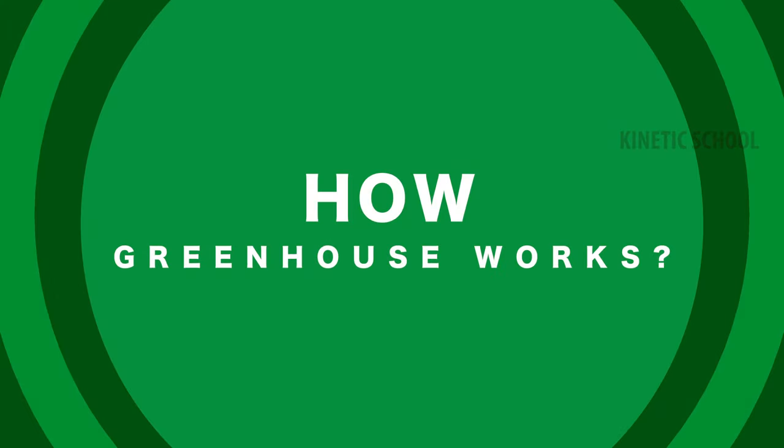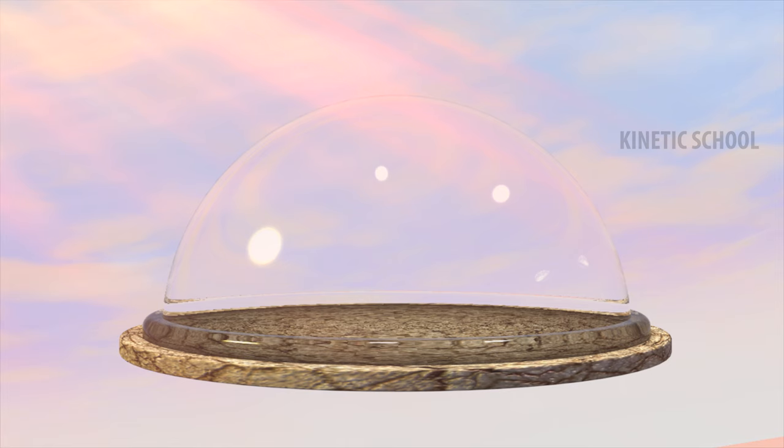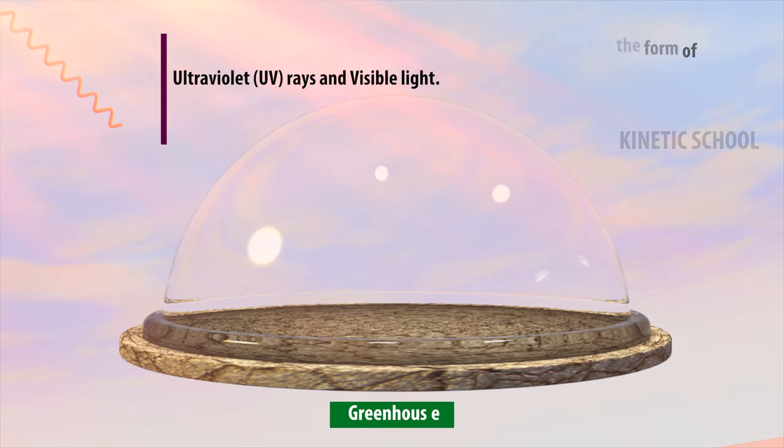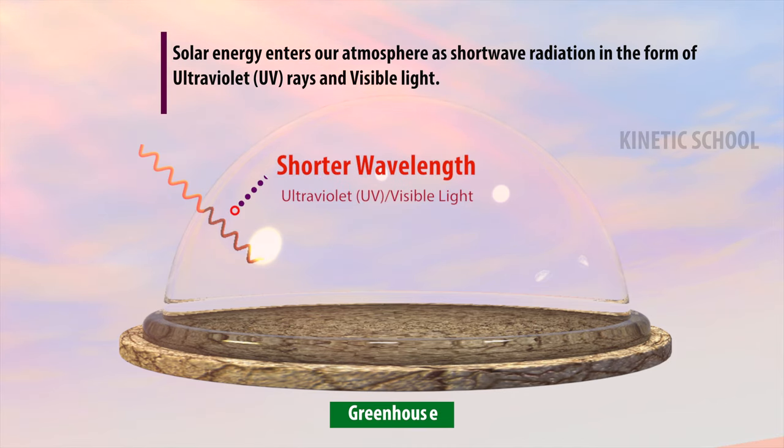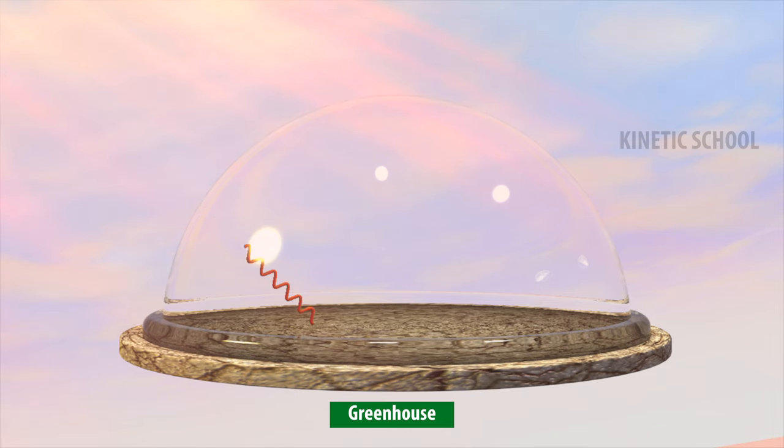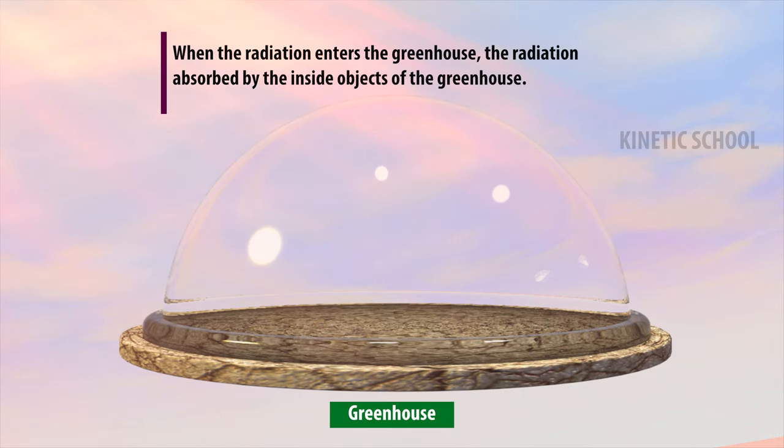How Greenhouse Works. Solar energy enters our atmosphere as shortwave radiation in the form of ultraviolet rays and visible light. When the radiation enters the greenhouse, the radiation is absorbed by the inside objects of the greenhouse.